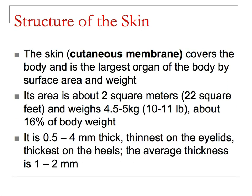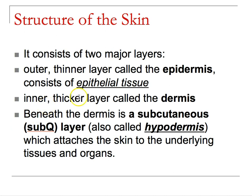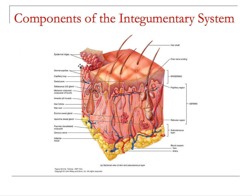The skin itself is a cutaneous membrane, about two square meters in area, ranging from one to two millimeters thin in places like the eyelids to thick on the heels. The epidermis is made up of epithelial cells. The inner thicker layer is the dermis, and deep to that is the hypodermis — also called subcutaneous. You can see epithelial cells arranged along a ridge called the papillary region.